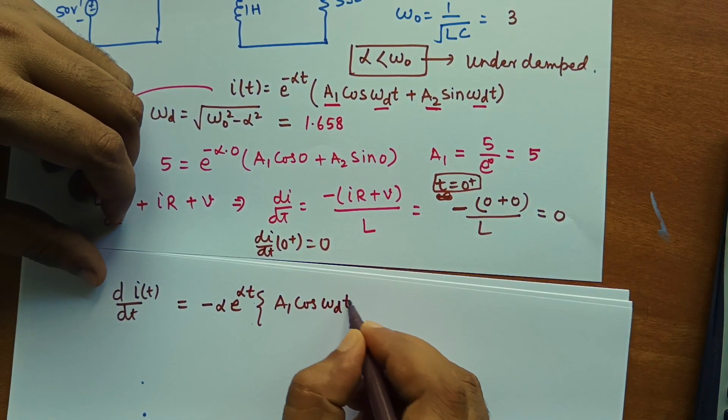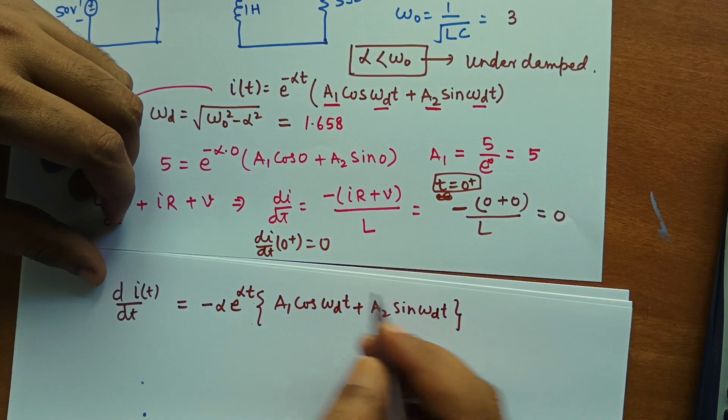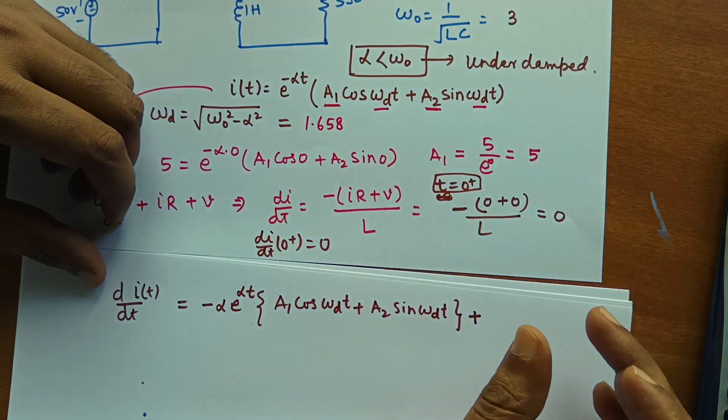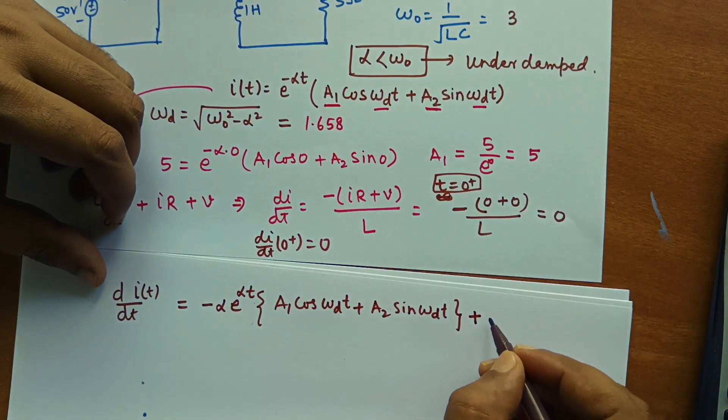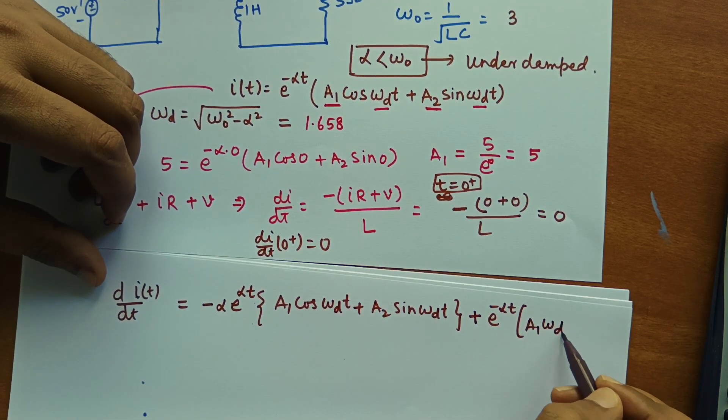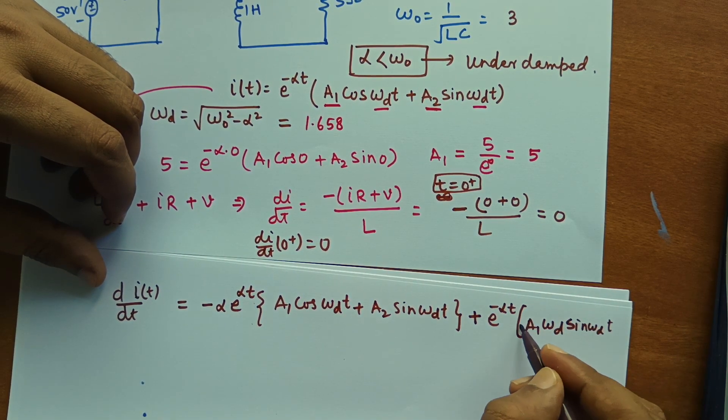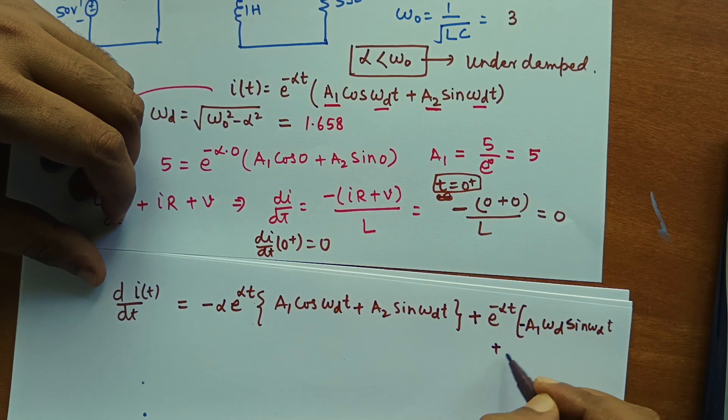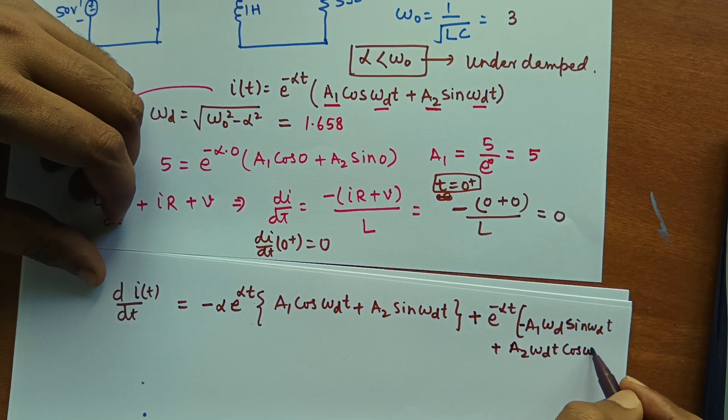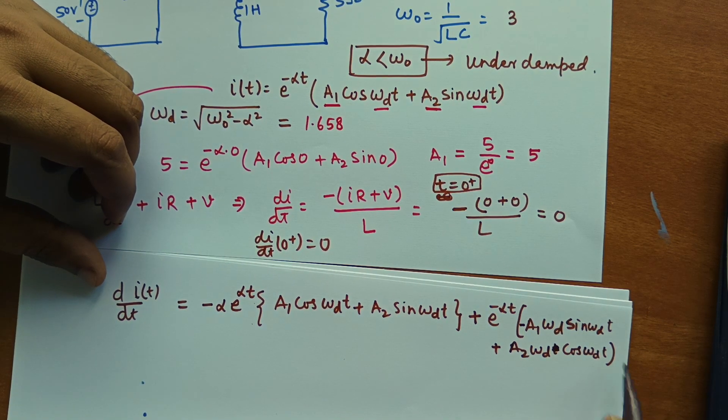cos omega dt plus a2 sin omega dt. Then for the second case plus, we will write this as derivative and this as constant. So it will become equal to minus alpha t. And derivative of this will become a1 omega d sin omega dt minus. Then sin differentiation is plus. So plus a2 omega dt cos omega dt. So this is our expression.